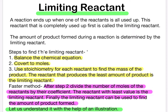This third process is somewhat lengthy, as we have to use the stoichiometry of each reactant to find the mass of the product. For a faster method, after step two we divide the number of moles of each reactant by their coefficient. The reactant with the least value is the limiting reactant. Finally, we use the limiting reactant to find out the amount of product formed.